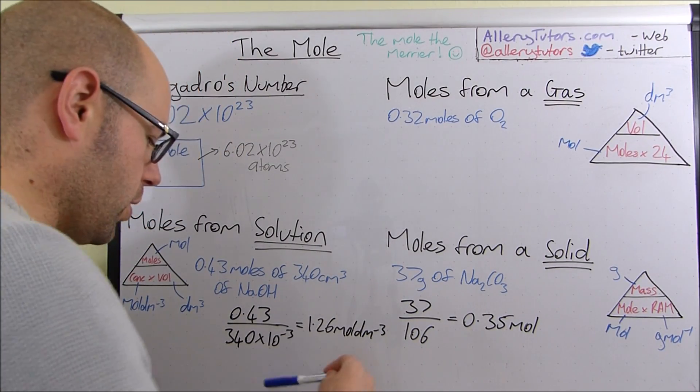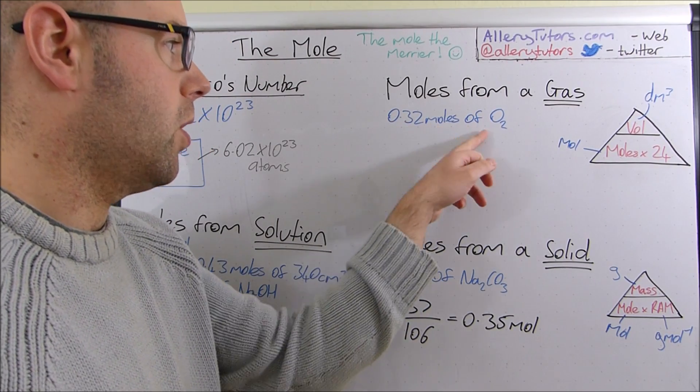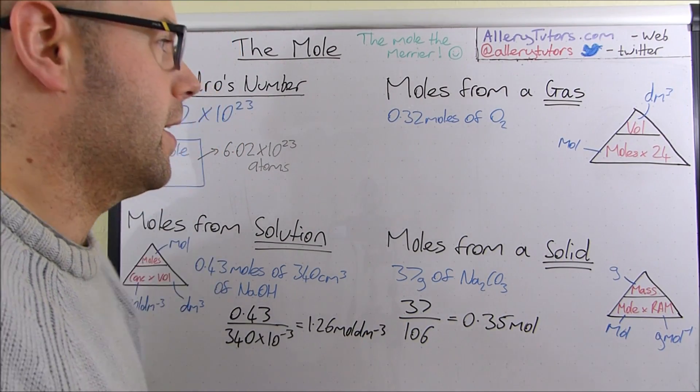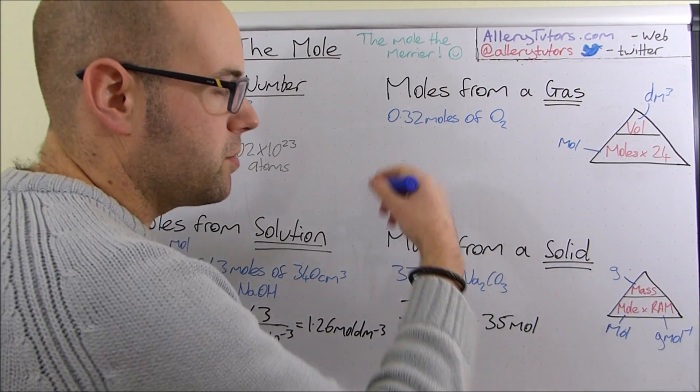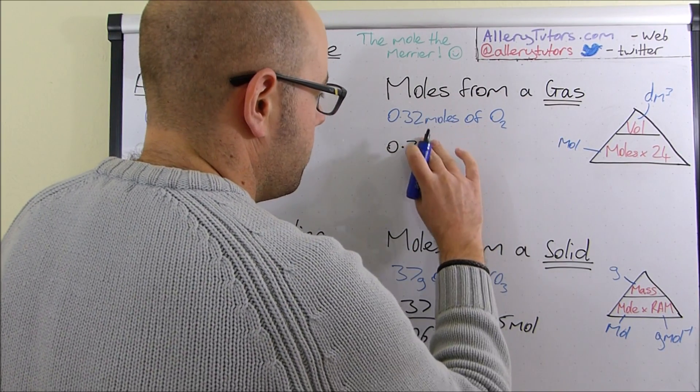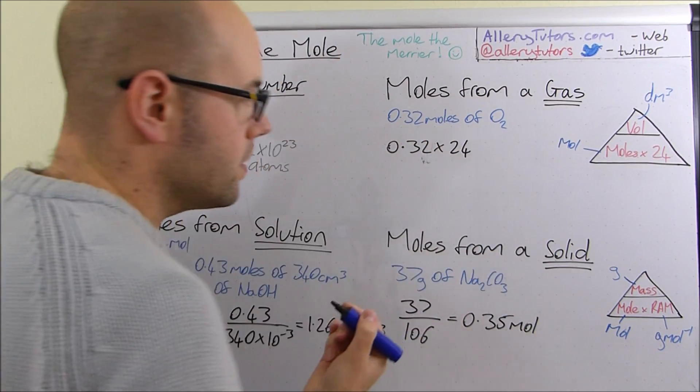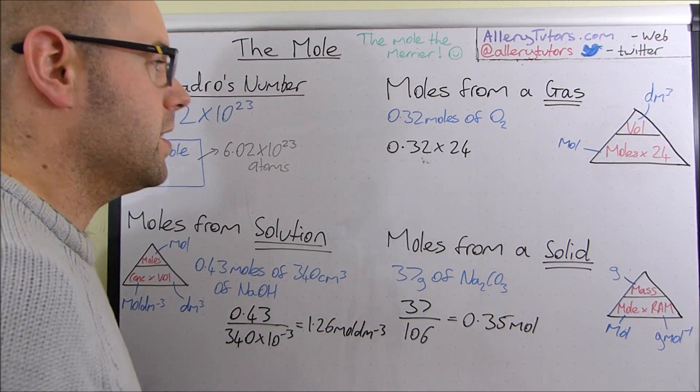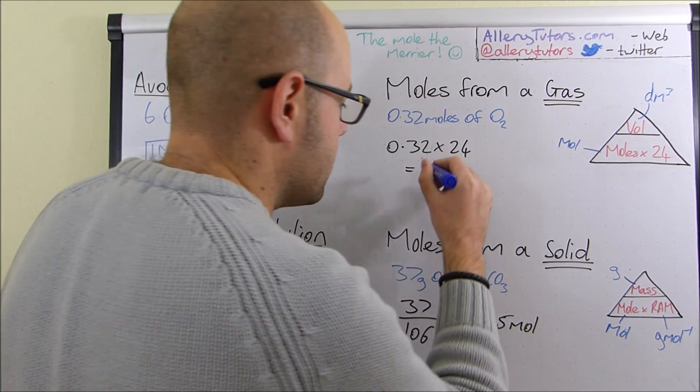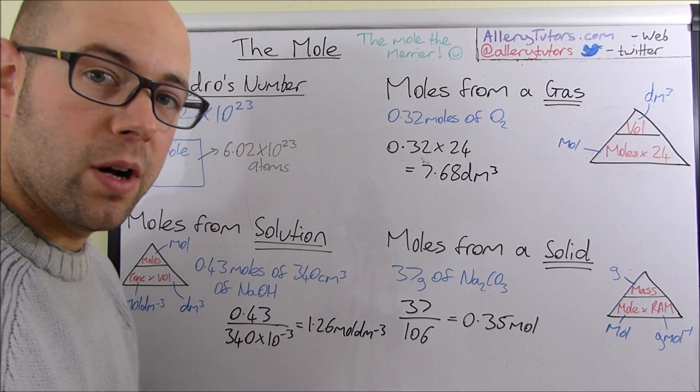So let's say we want to work out the volume of a gas. Okay. We have 0.32 moles of O2, which is oxygen gas. And we want to work out, like, what volume does that occupy? So it's dead easy. All we do is we do 0.32. Oops, not 33, 0.32. That's the number of moles. We multiply that by 24, because that's the volume that one mole of any gas will take. And then, if we put that in our calculator, we should get 7.68 decimetres cubed. There you go. And that's the volume of our gas.